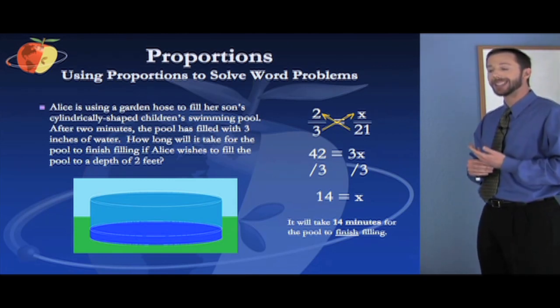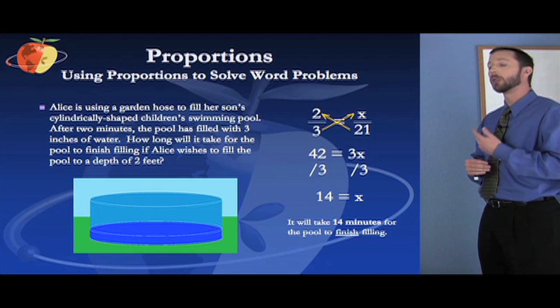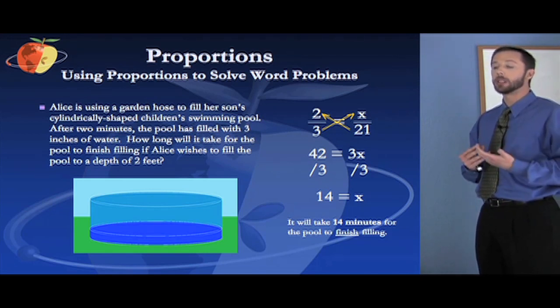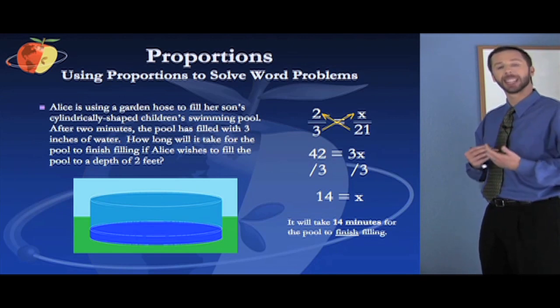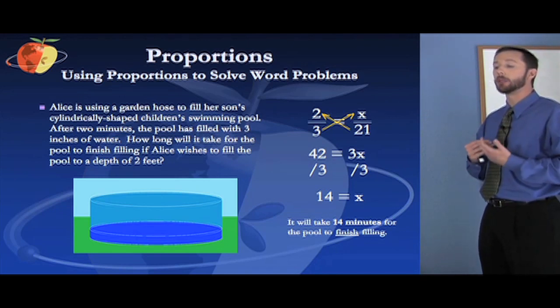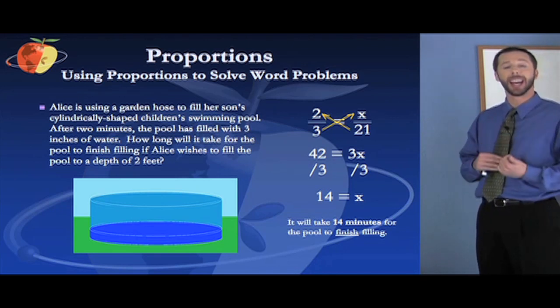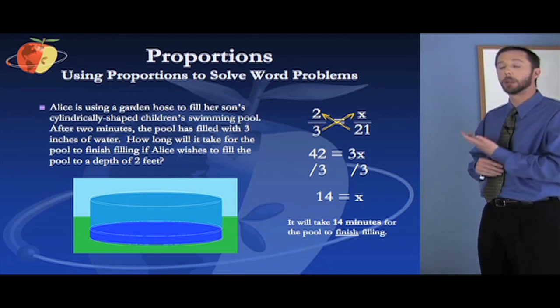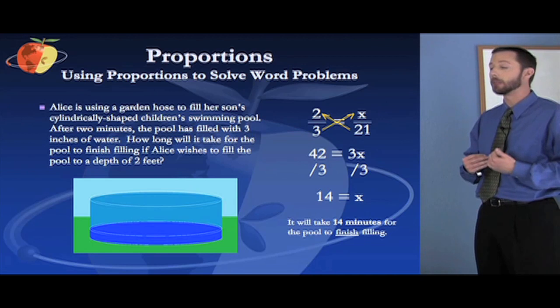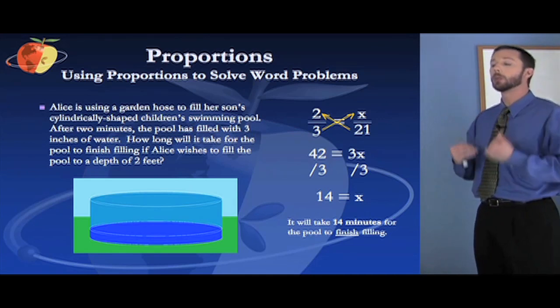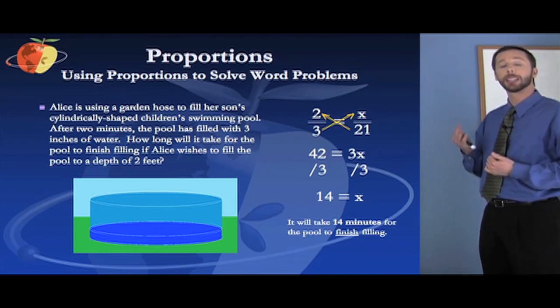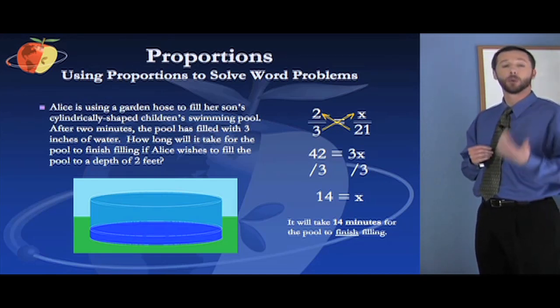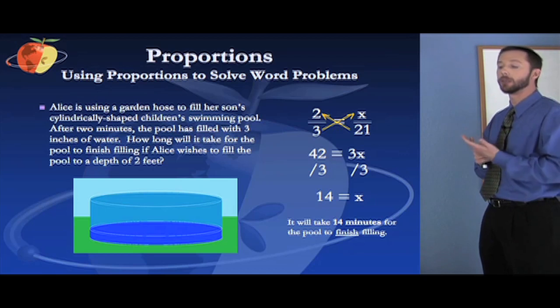We go 3 times x and we get 3x, and we go 21 times 2 and we get 42. Now we need to get x by itself or isolate it. So we're going to divide both sides by 3. Whatever is being done to x, you do the opposite. If something is being added, you subtract. If something in this case is being multiplied, you divide by that same thing. So it's being multiplied by 3, we divide by 3. The 3s cancel out on the side of the equation where we have x, x is by itself, 42 divided by 3 gives us 14.